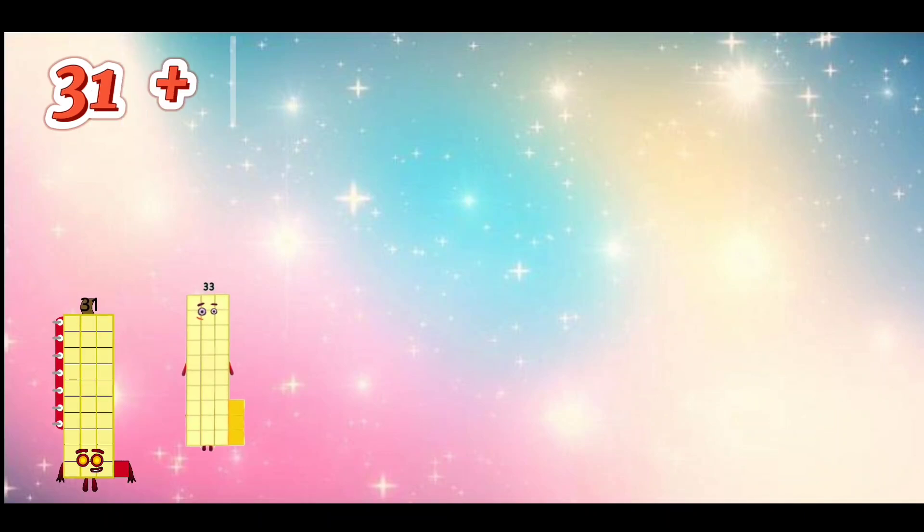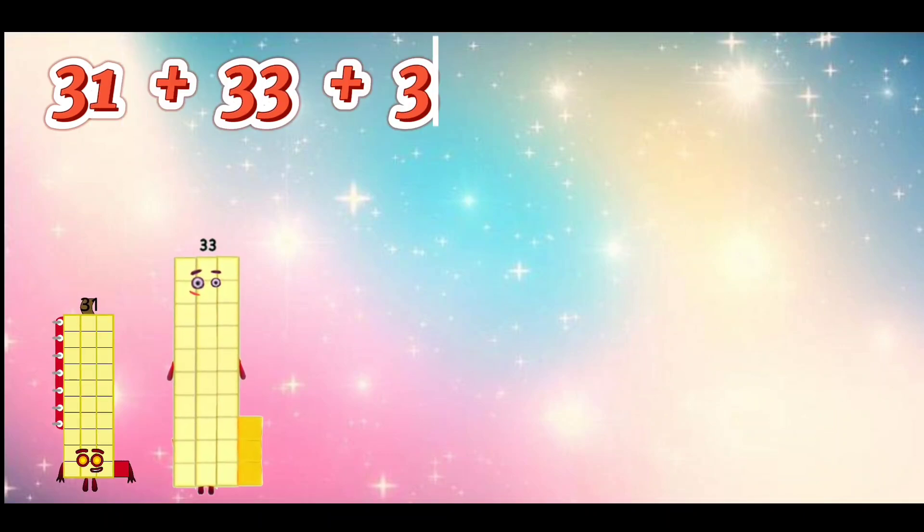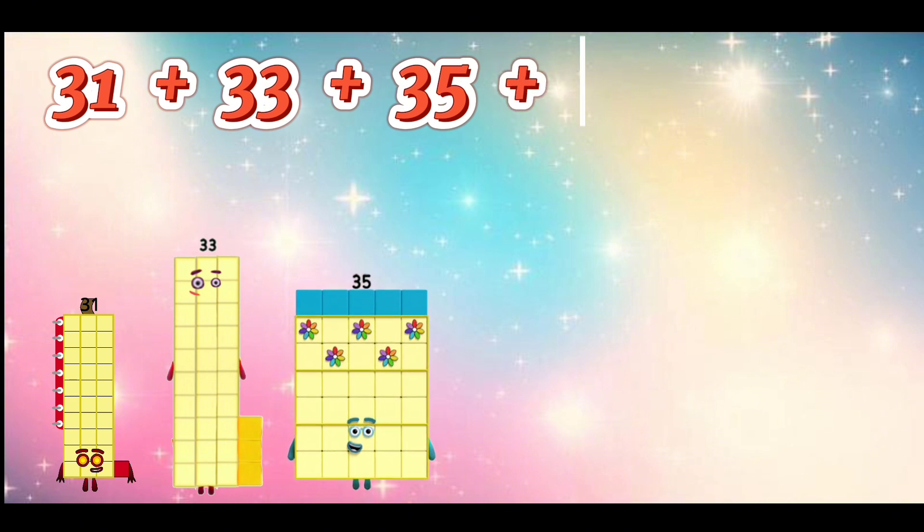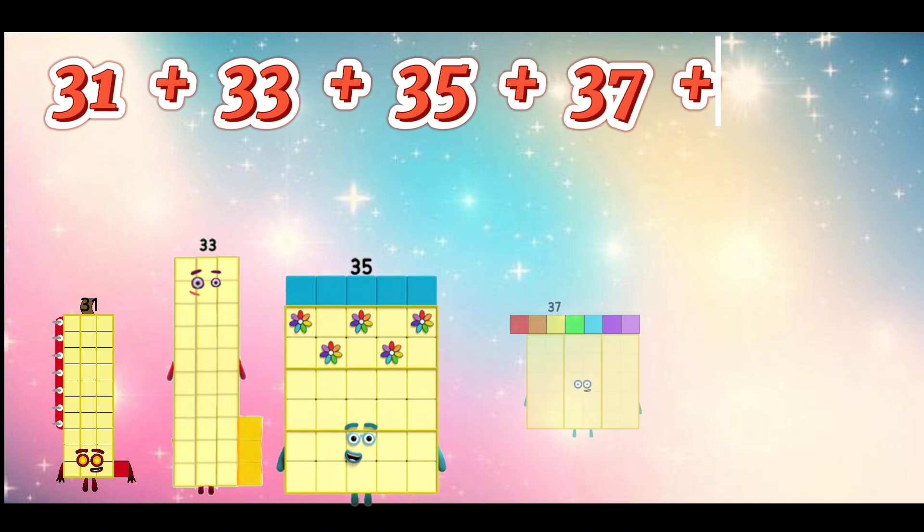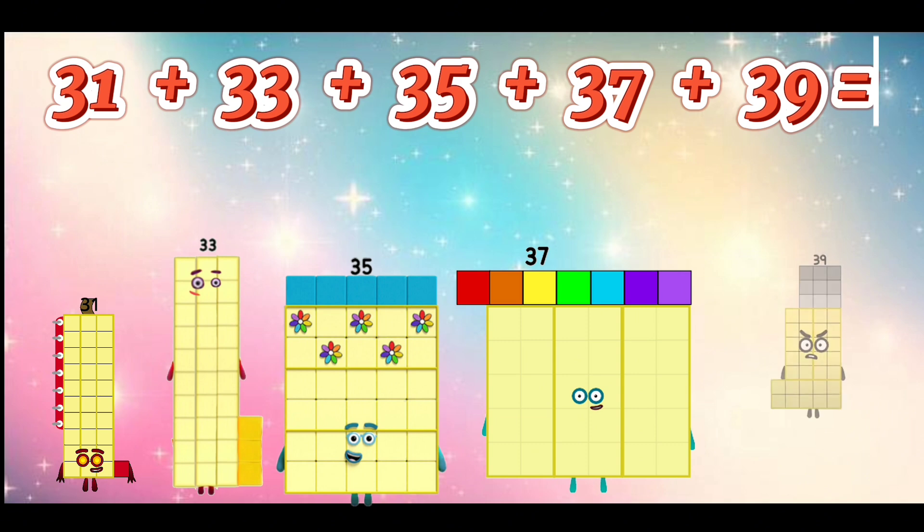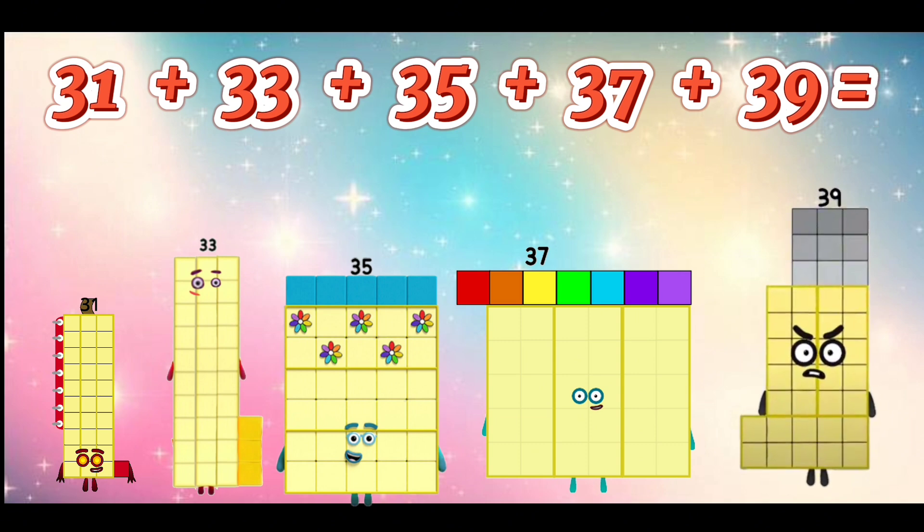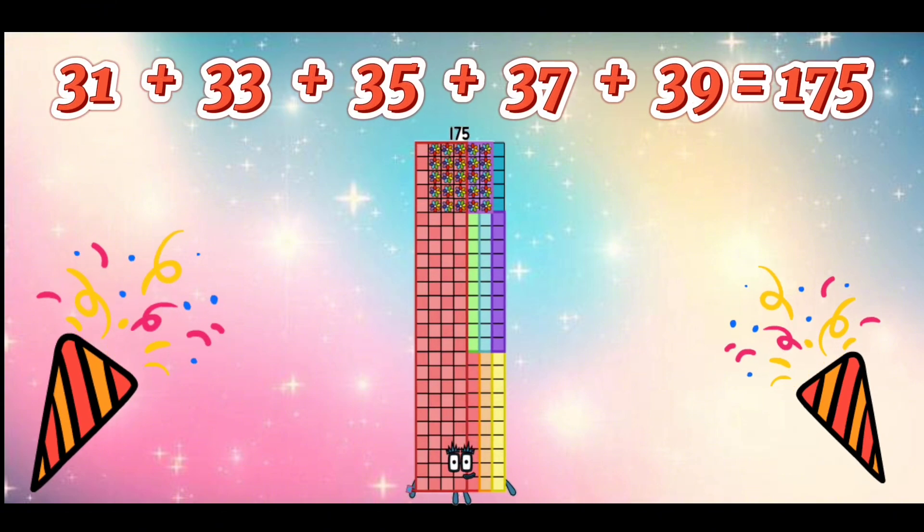31 plus 33 plus 35 plus 37 plus 39 is equal to 175.